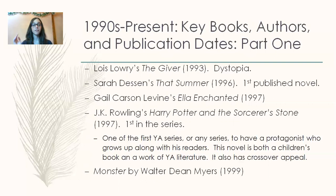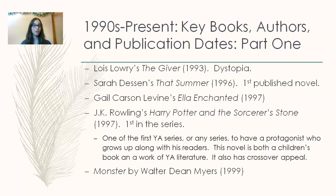Sarah Dessen publishes That Summer in 1996 — her first published novel; she's a very prolific young adult author. Ella Enchanted by Gail Carson Levine is published in 1997. Also in 1997, J.K. Rowling publishes Harry Potter and the Sorcerer's Stone, the first in the series. This is one of the first YA series to have a protagonist who grows up along with his readers. The novel is both a children's book and a work of YA literature, with a lot of crossover appeal — many adults read it too.